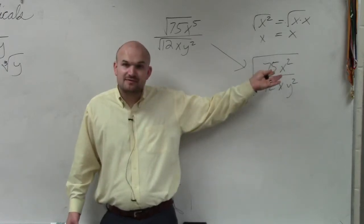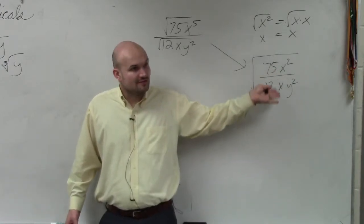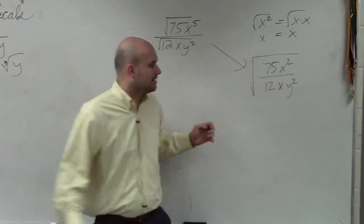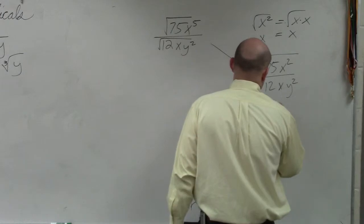75 over 12. 12 does not divide into 75, right? But can we reduce that fraction? Yeah, we can divide 3 into the top and bottom, which gives us 25 over 4.